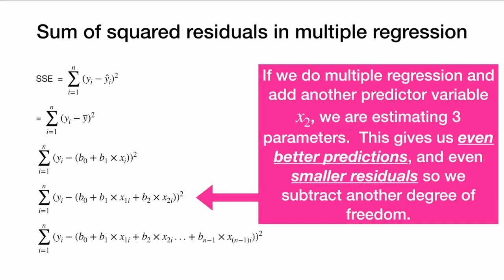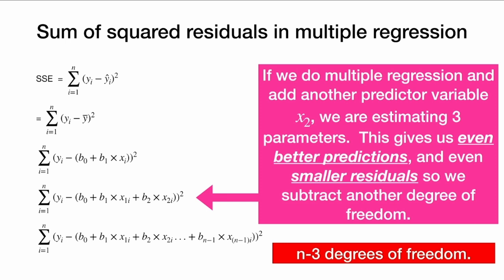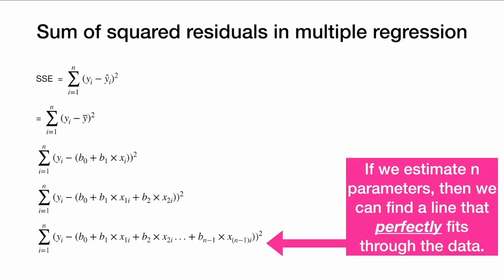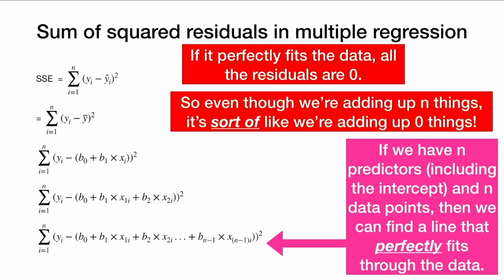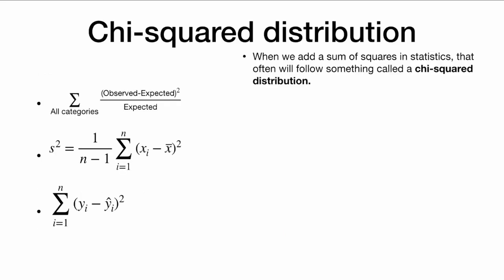If we do multiple regression and add another predictor variable, we are estimating three parameters, giving even better predictions and even smaller residuals, so we subtract another degree of freedom: n minus three. And if we kept going and estimated n parameters, we can perfectly fit a line to the data. If we perfectly fit the data, all the residuals will be zero. So even though we're adding up n things, it's sort of like adding up zero things — zero degrees of freedom.